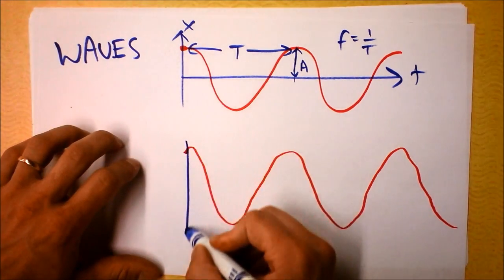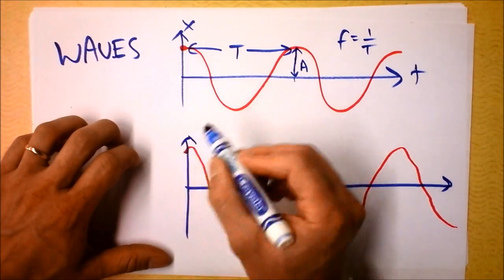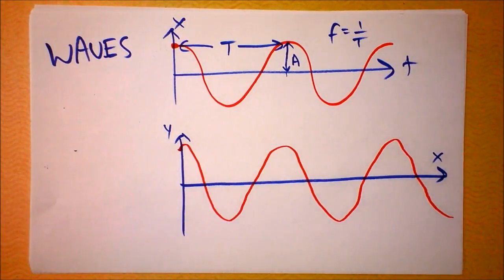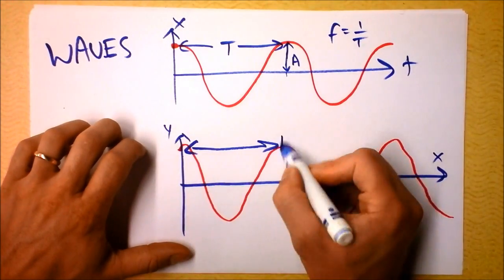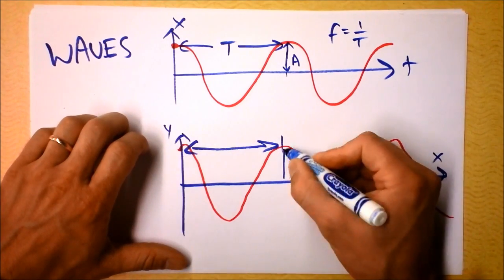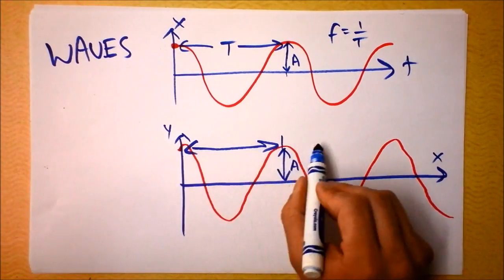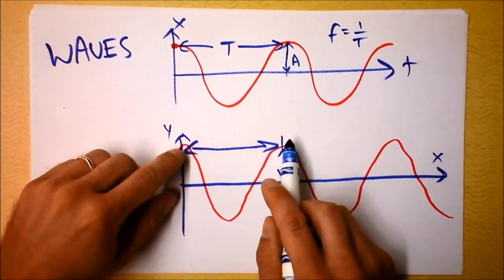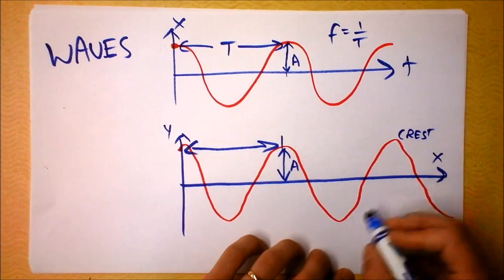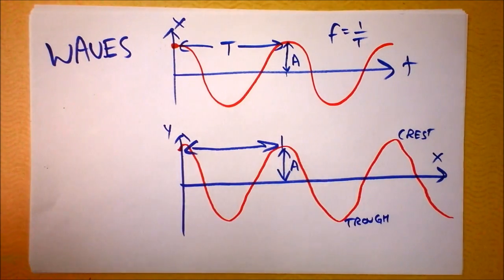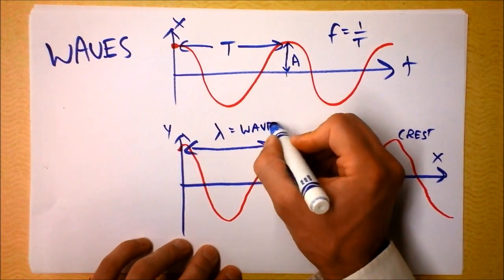Now we've got something a little different. I'm going to draw some axes on this and say that this is position in the y direction versus position in the x direction. Now we've got different things to define. This distance is no longer a time, so it's not a period. This still is the amplitude. This distance right here — the distance between two crests of a wave — we want to call the wavelength, and we'll use the letter lambda to represent that.